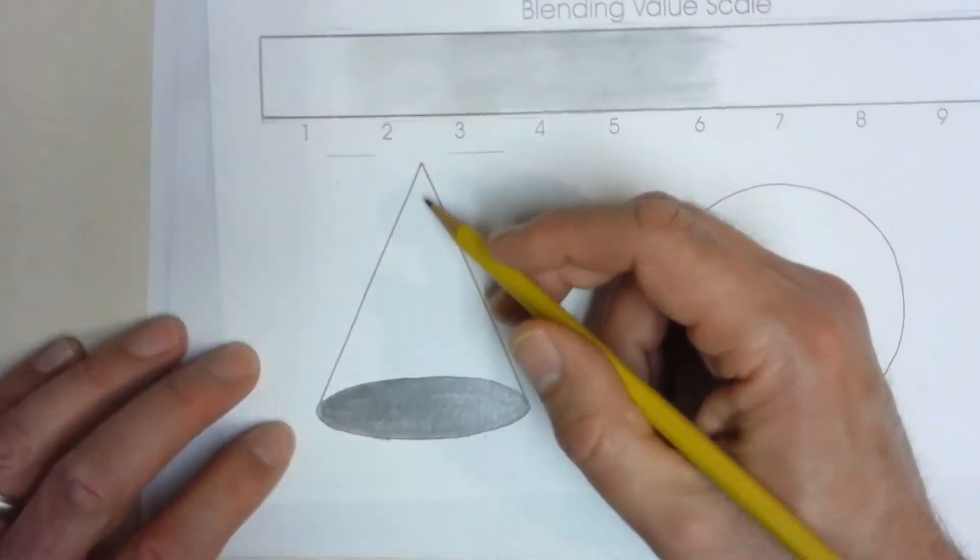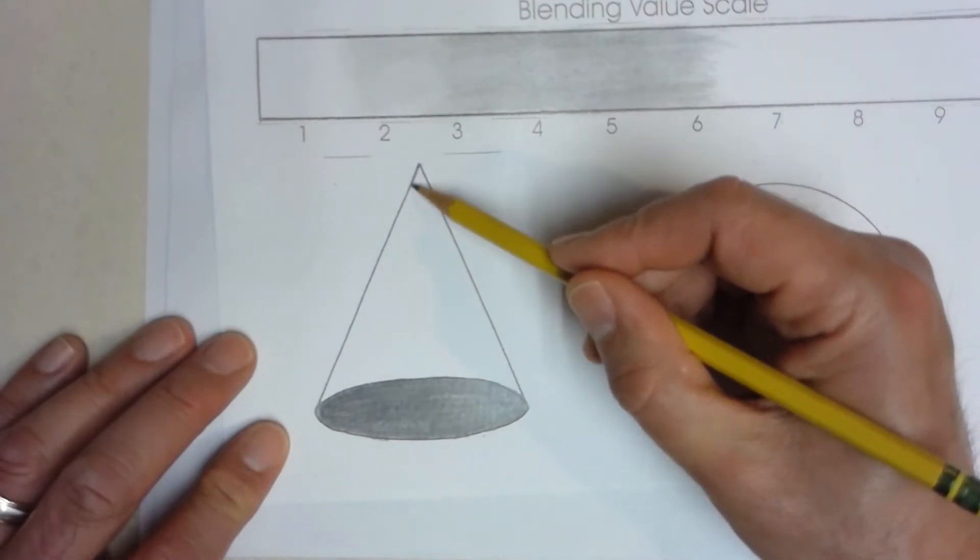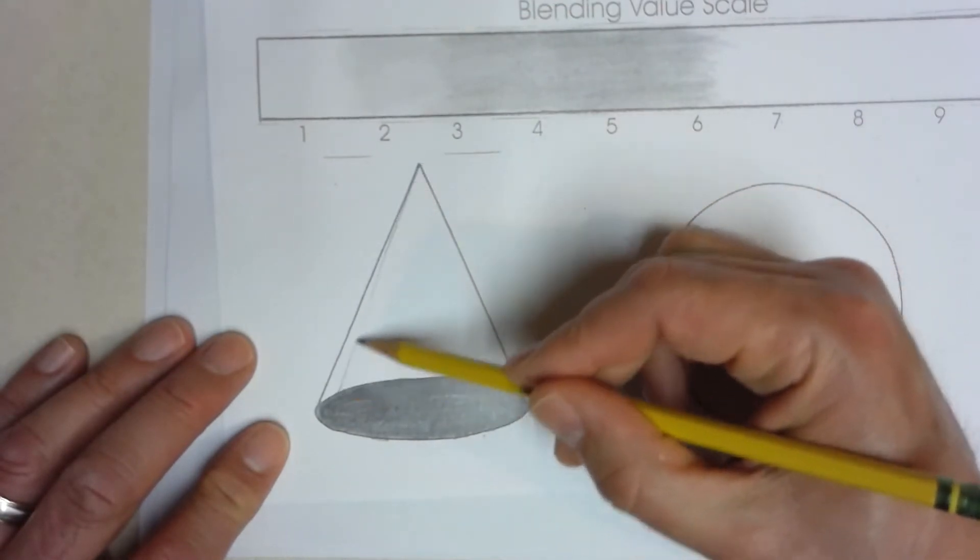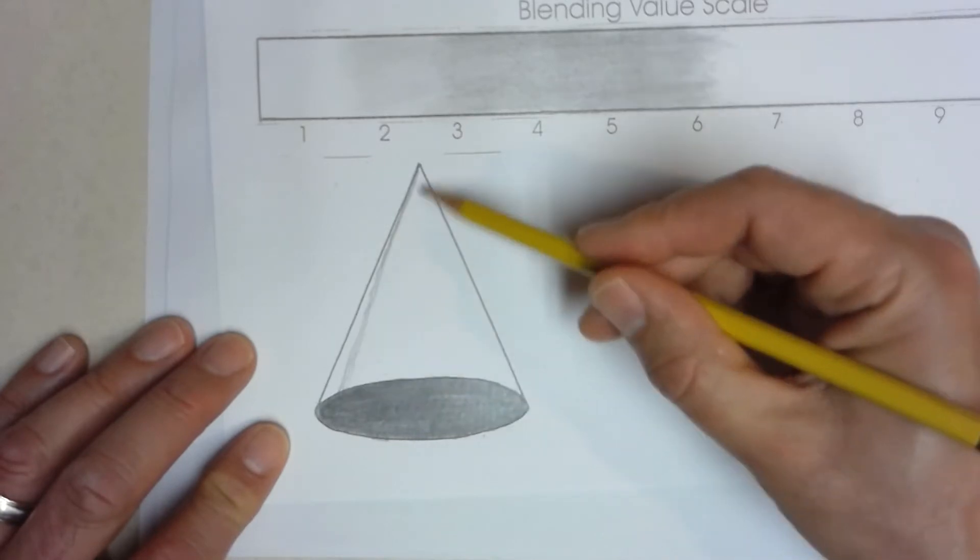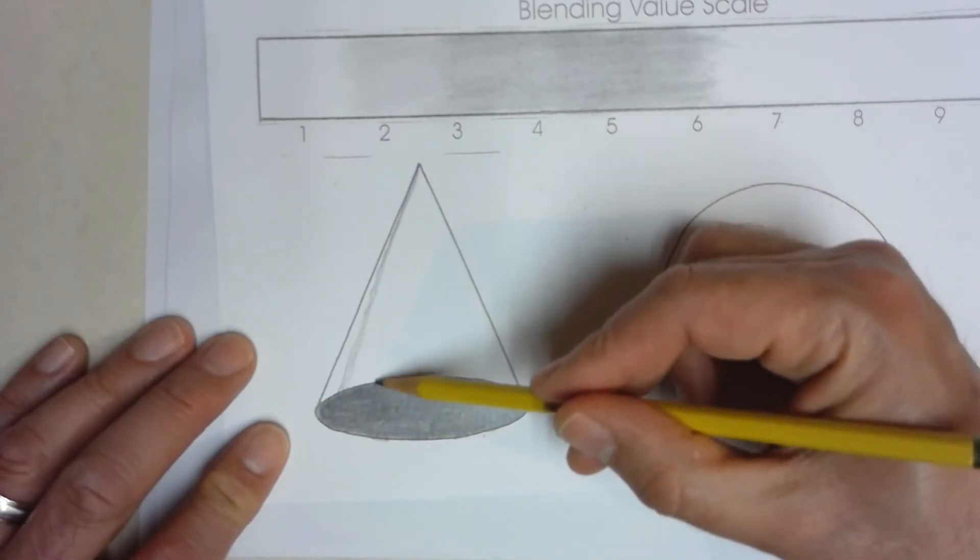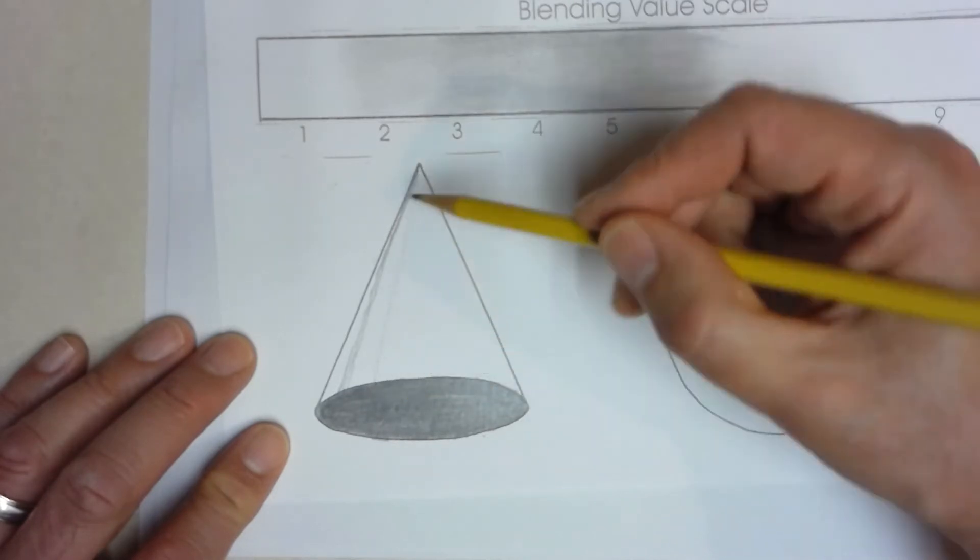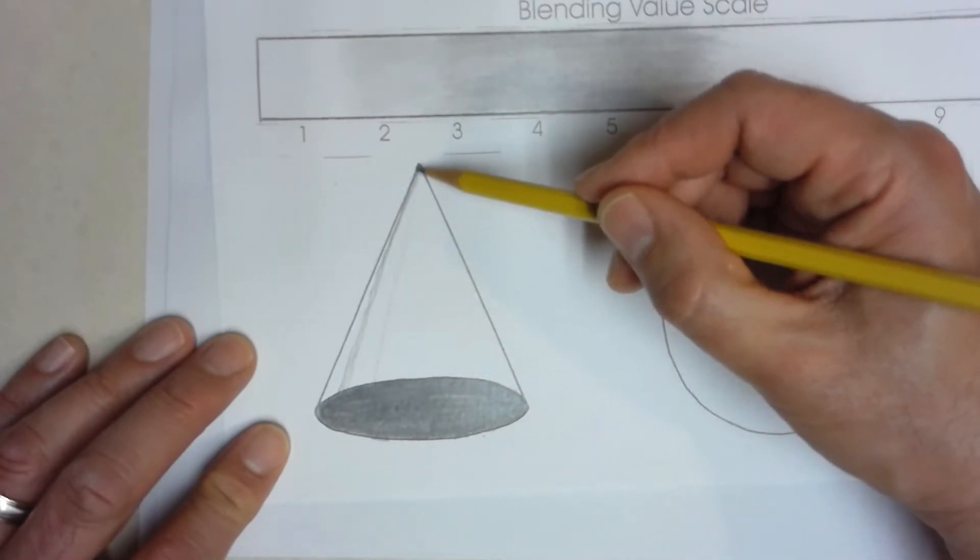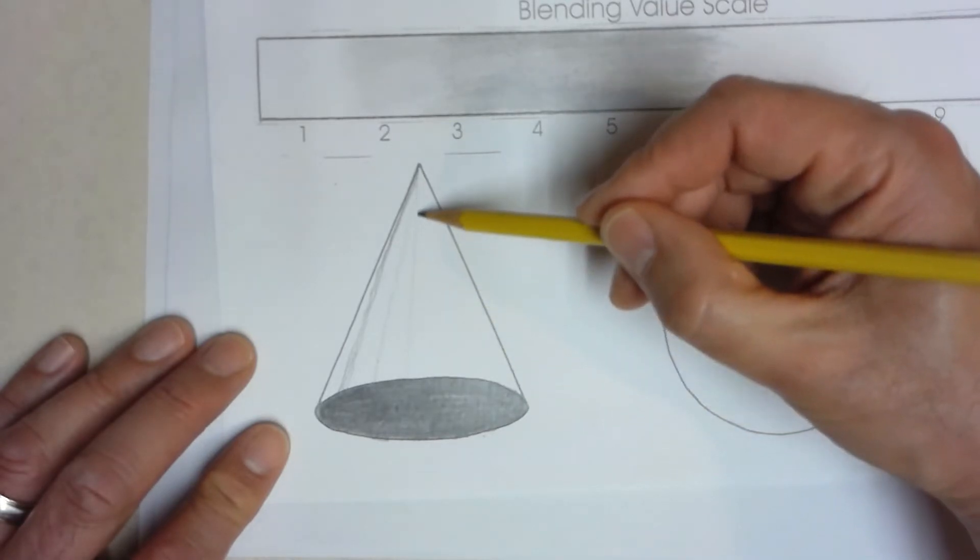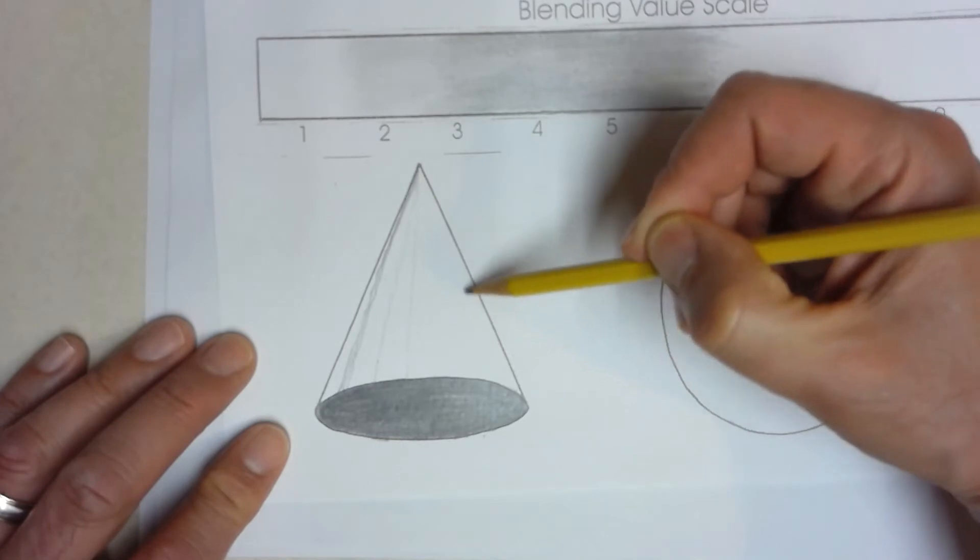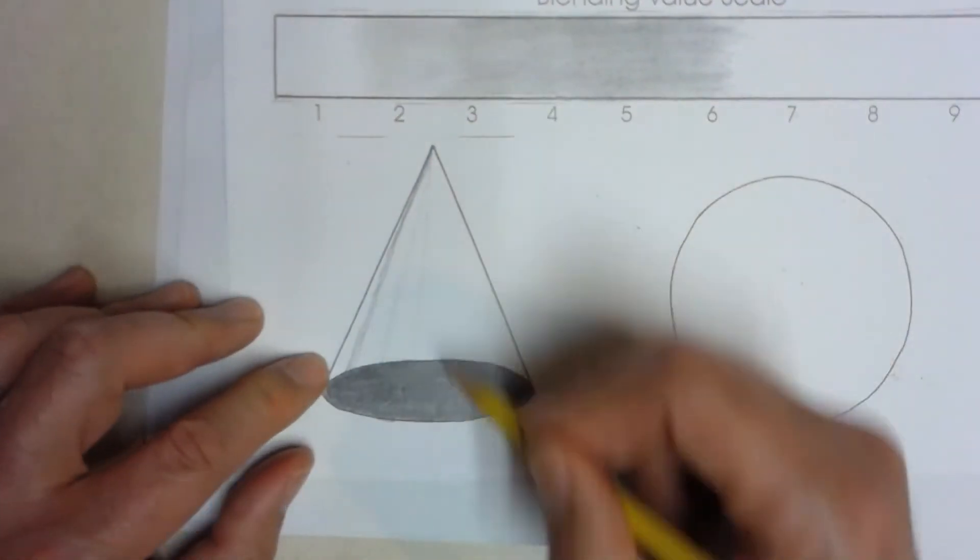So what we're going to do is, and I don't recommend you drawing these lines that I'm going to draw. I'm just doing this so you can see what we're going to do. I'm going to draw a really black sliver of value here and then a value here. Again, I would not draw these lines. Usually I don't say do as I say and not as I do, but the reason why I'm afraid to ask you to do this is I'm afraid you'll push down too hard and then these lines will show up in the lighter areas.